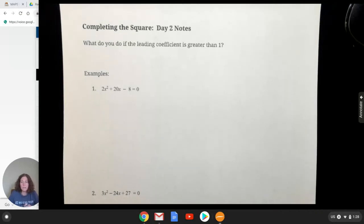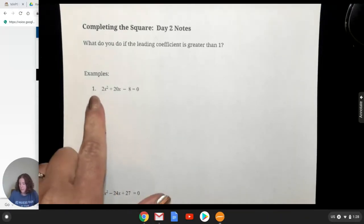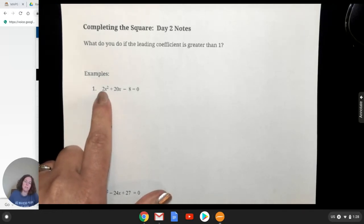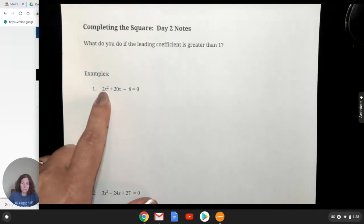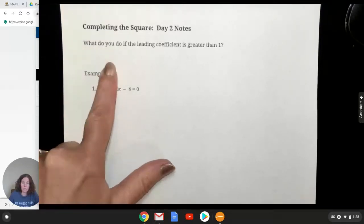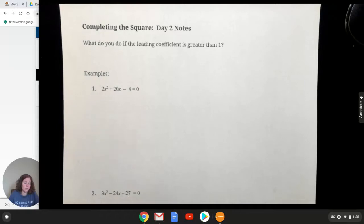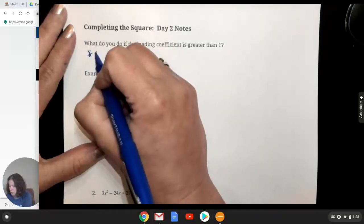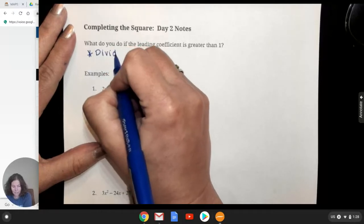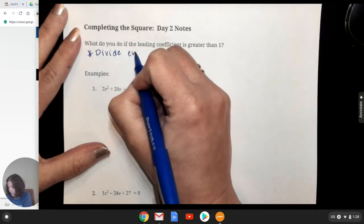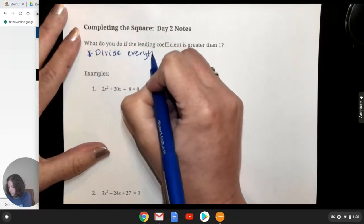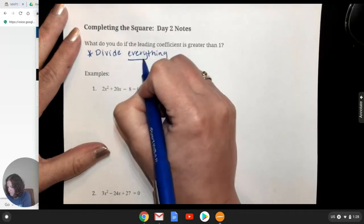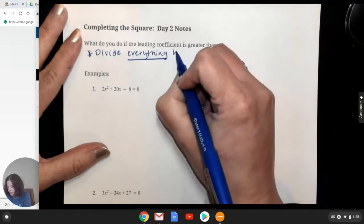All right, so on the first video we talked about how you could only do completing the square if there was no number in front of the x squared. So this one you can see has a two. So our question is what do you do if the leading coefficient is greater than one? So the first thing you need to do is divide everything, and I mean everything, by that coefficient.